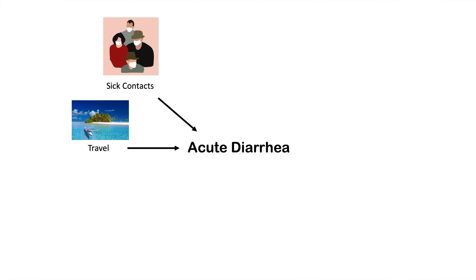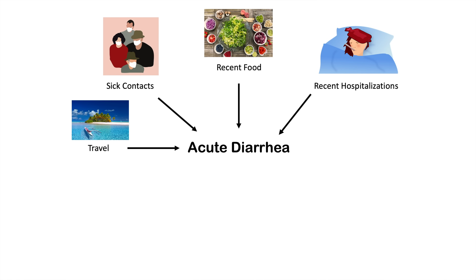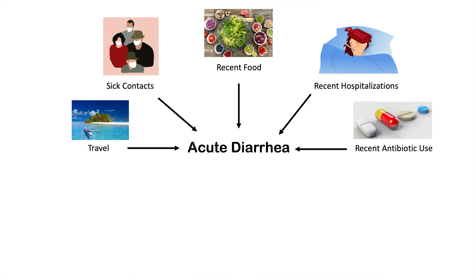Another factor is sick contacts — are other people in their life having similar diarrhea? We also look at recent food intake, since an individual may have eaten somewhere with a food poisoning outbreak. Recent hospitalization is also relevant, as they could have picked up an infectious cause in the hospital. Tied in with this is recent antibiotic use, which can cause acute diarrhea through an adverse reaction or by leading to a secondary infection.